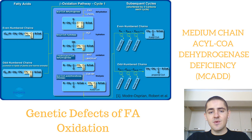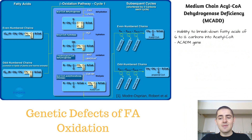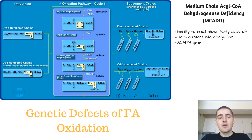In this video, we review MCAD deficiency according to Leninger's Principles of Biochemistry textbook, the 6th edition. MCAD deficiency, or MCADD, is a genetic defect that impairs fatty acid oxidation — more specifically, the inability to break down fatty acids of 6 to 12 carbons into acetyl-CoA. This mutation takes place in a gene that encodes the medium-chain acyl-CoA dehydrogenase enzyme, or MCAD.